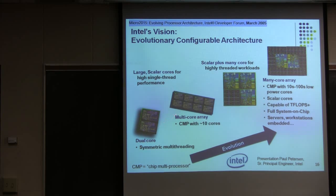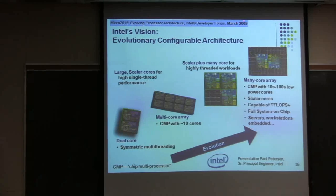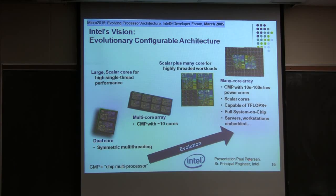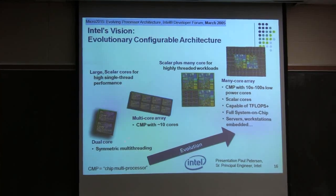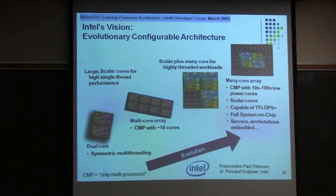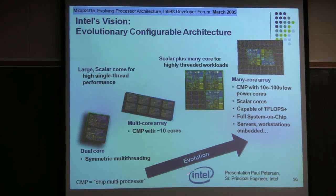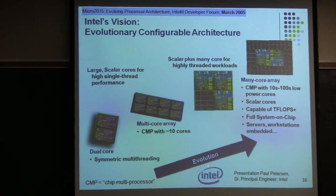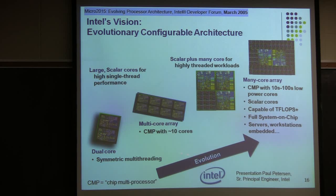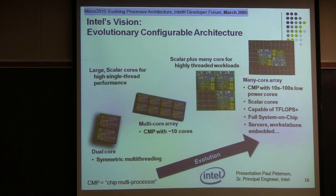This is out of a talk that Paul Peterson gave in March 2005 — about four years ago at that point. It was how he envisioned the evolution at Intel from dual-core to multi-core, in the sense of 10, 16, or 32 cores. And then it was a merging of this concept...